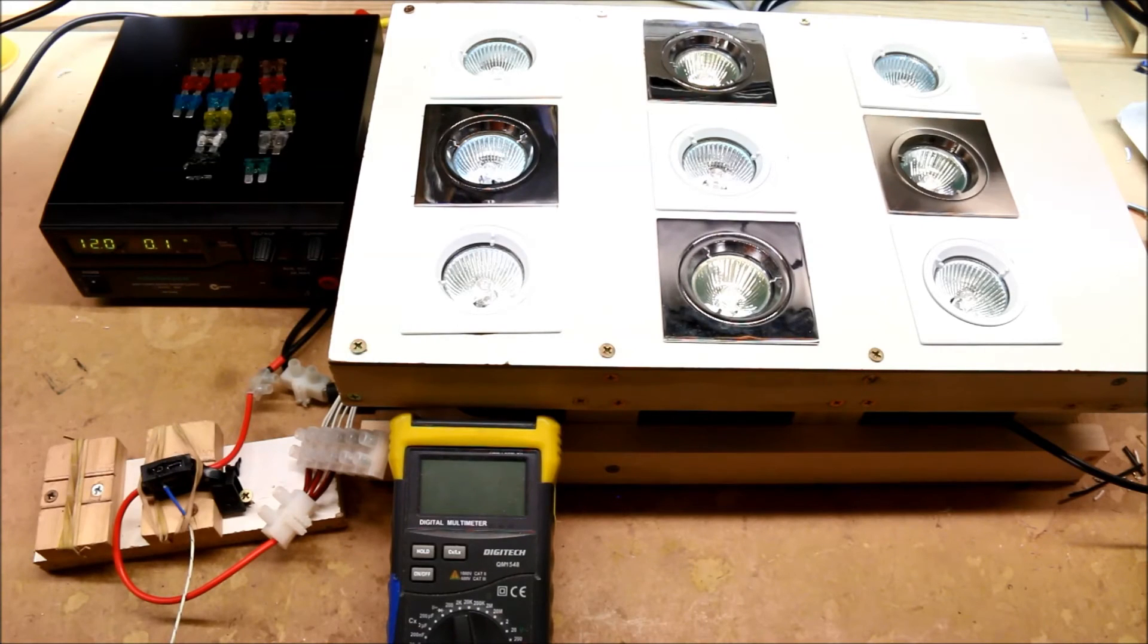This is the fuse testing setup with a lab power supply that can do up to 40 amps between 1 and 16 volts. It's constant current limited so we can limit the power and then adjust it and ramp it.